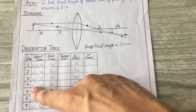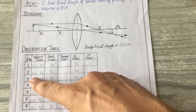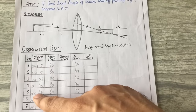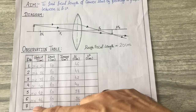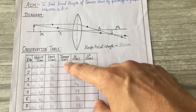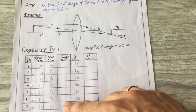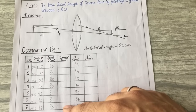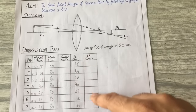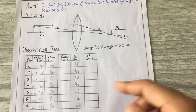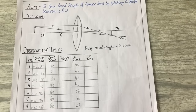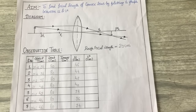Pay attention to the object needle positions. First I will place the object at 2f, then reduce by 2 cm each time — so 2f minus 2, 2f minus 4, 2f minus 6 — and similarly 2f plus 2, 2f plus 4, and 2f plus 6. For each of these object positions I have recorded the image positions, and then we need to calculate u and v.